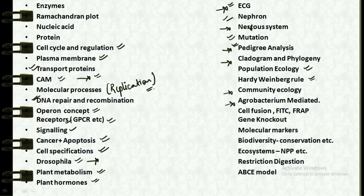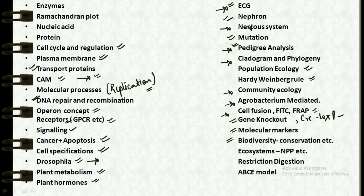From community ecology we have Agrobacterium-mediated gene transformation. The next topic is the cell fusion technique, the FITC and FRAP technique. Then we have gene knockout, including the Cre-lox system, and also the topic of molecular markers.